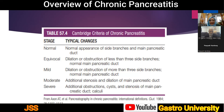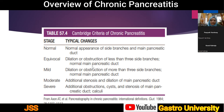Disease grading usually uses the Cambridge classification, originally derived from ERCP findings. A normal-appearing main duct and side branches is labeled normal. Dilatation of three or fewer side branches with a normal main pancreatic duct is equivocal. Dilatation of more than three side branches with a normal main duct indicates mild disease. Moderate disease additionally involves stenosis of the main duct. Severe disease presents with the many findings that surgeons encounter in clinical practice.